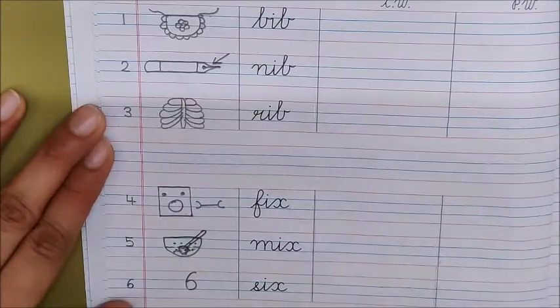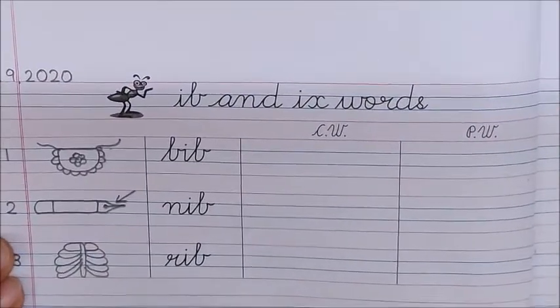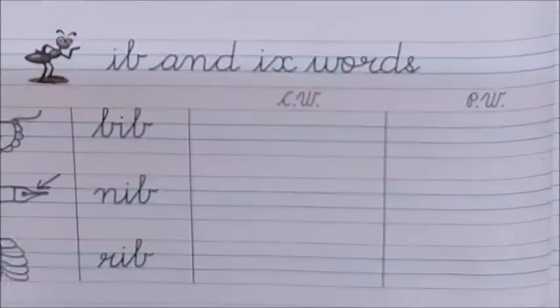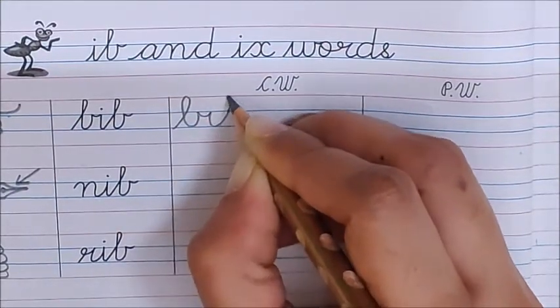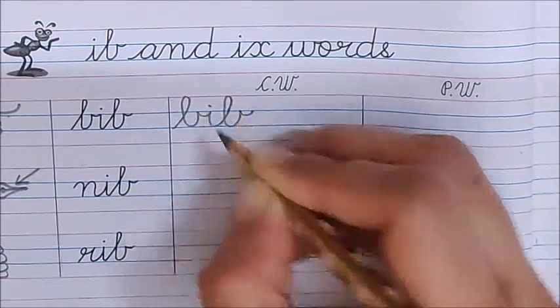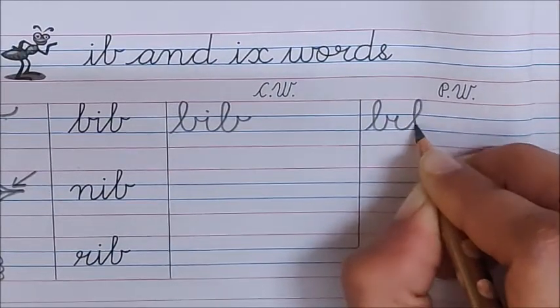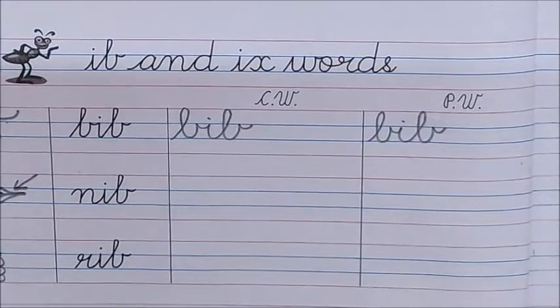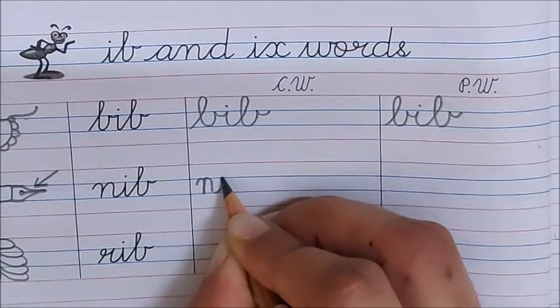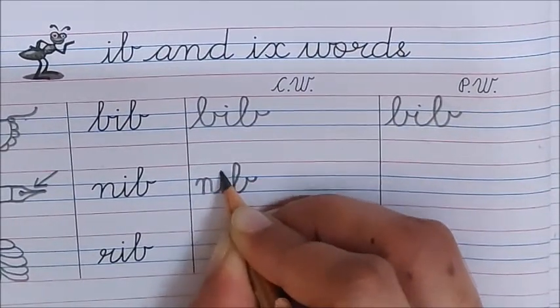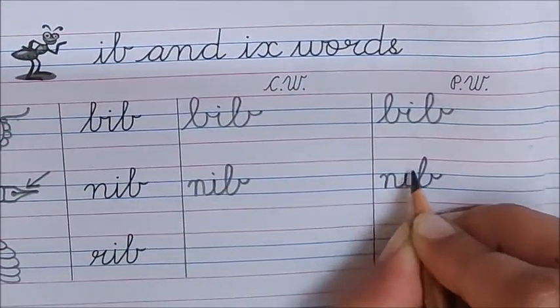Okay children. Now children, after drawing, it is time for writing. So let us begin writing. Our first word is Bib. So say and write with me children. The next word is Nib. N, i, b, Nib. N, i, b, Nib.